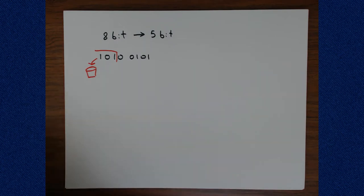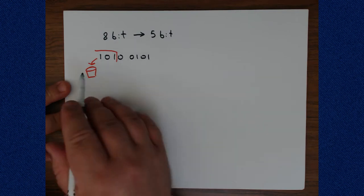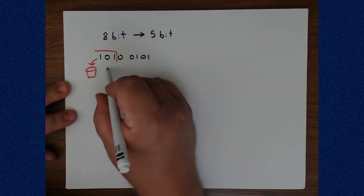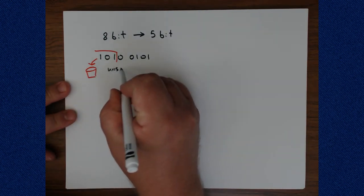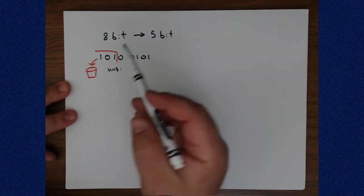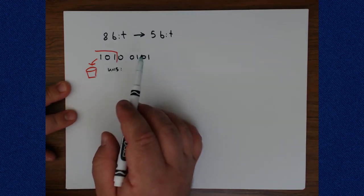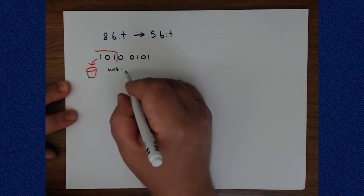So what does that mean in the end? Well, originally this bit string, if this was an unsigned number, then we would have had 128 and 32 and 5, that's 165.